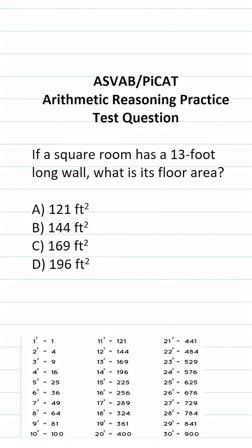This arithmetic reasoning practice test question for the ASVAB and PyCat says: if a square room has a 13-foot-long wall, what is its floor area? On the ASVAB and PyCat, you're not given a reference sheet or a calculator. For that reason, in addition to knowing these basic geometry formulas, you also have to be able to work out these questions by hand.